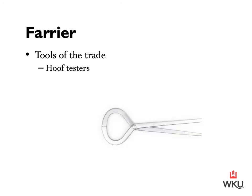We are now going to move into tools of the trade relating to farriery. The first is hoof testers. This is a device used in the examination of the horse's hooves to pinpoint sources of pain by applying pressure in certain areas. This tool is used by the farrier looking for an abscess or by a veterinarian as part of a standard lameness exam. Care must be taken to reduce the chances of a false positive reading from a sensitive horse.